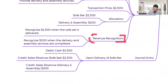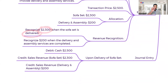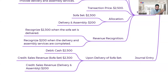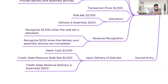Now step five — when do we recognize revenue? When you deliver the sofa set, you recognize rupees 2,300 as revenue for the sofa set. When you complete the assembly service, you recognize rupees 200 as revenue for the delivery and assembly part. So revenue is recognized as and when each performance obligation is completed. We received rupees 2,500 in total — rupees 2,300 for the sofa set and rupees 200 for delivery and assembly.